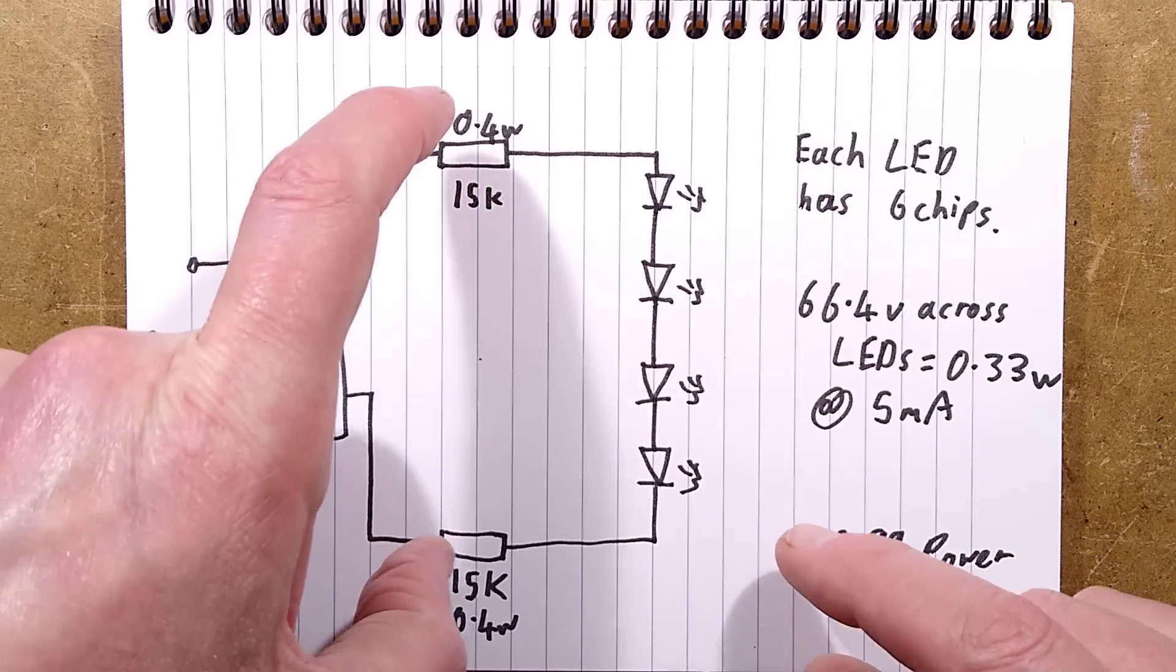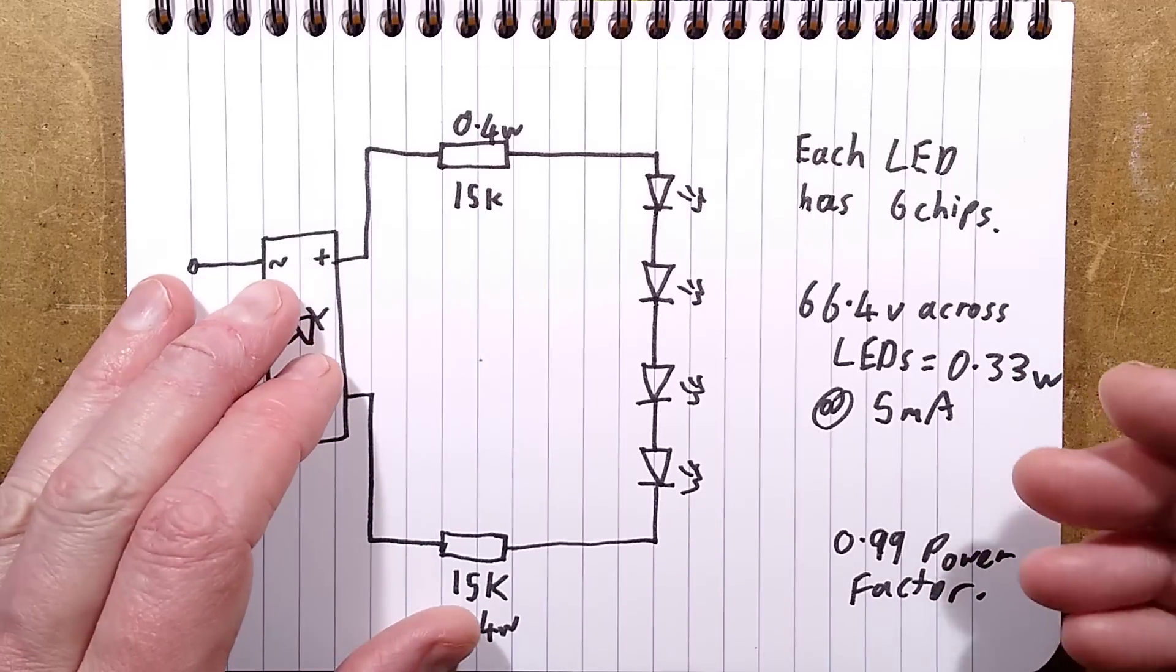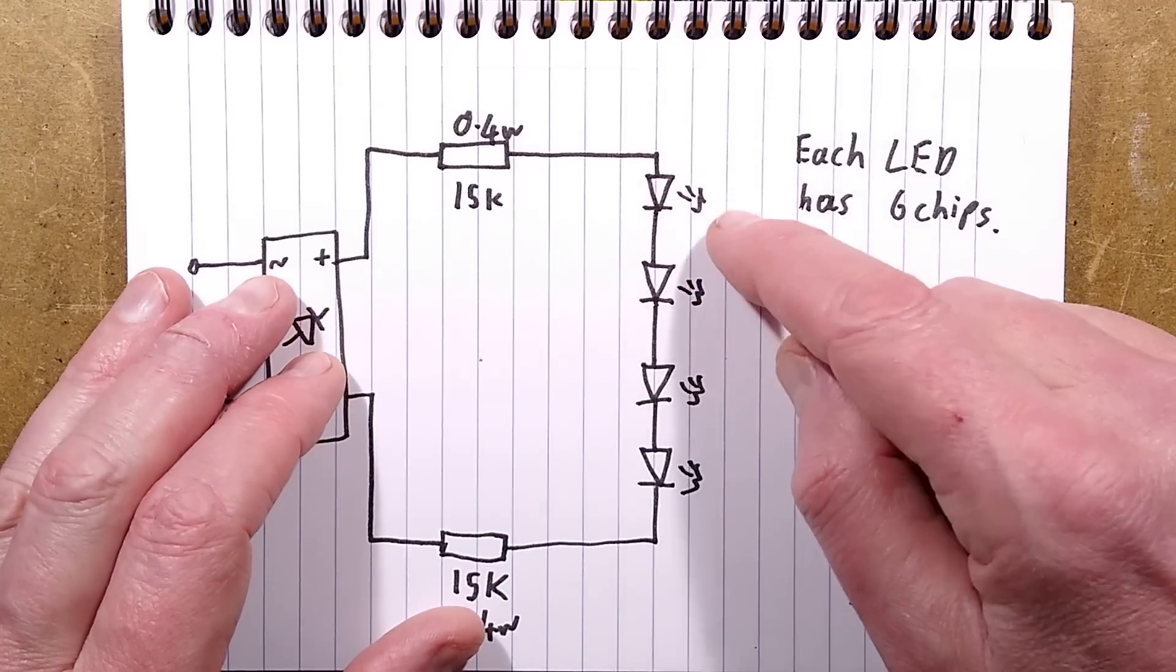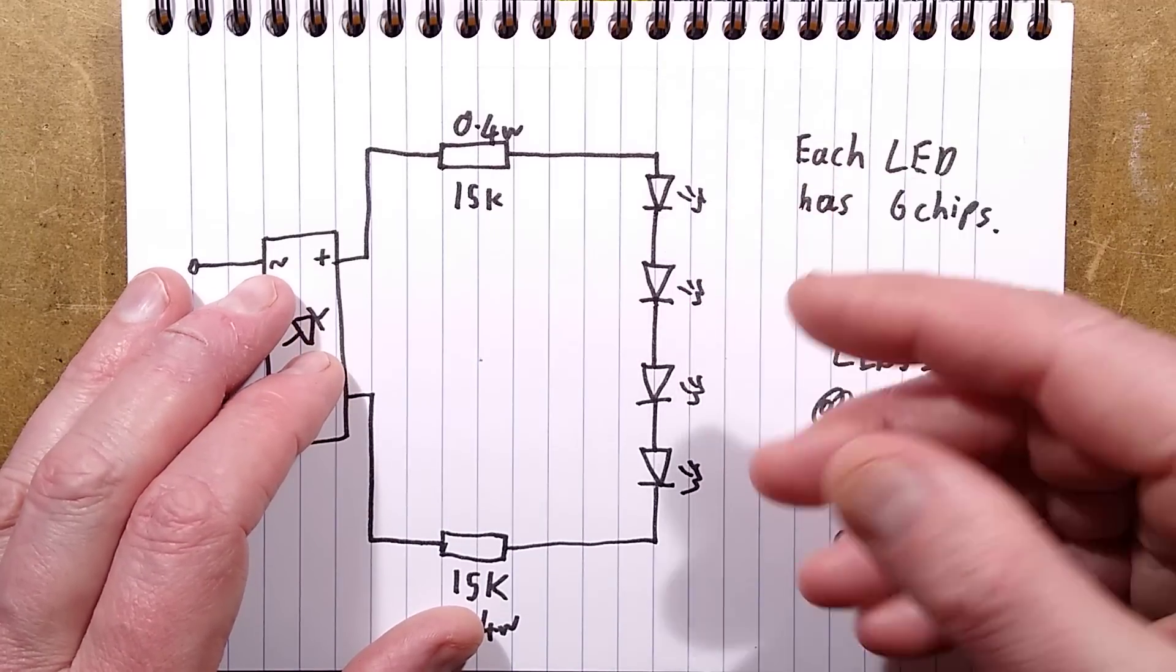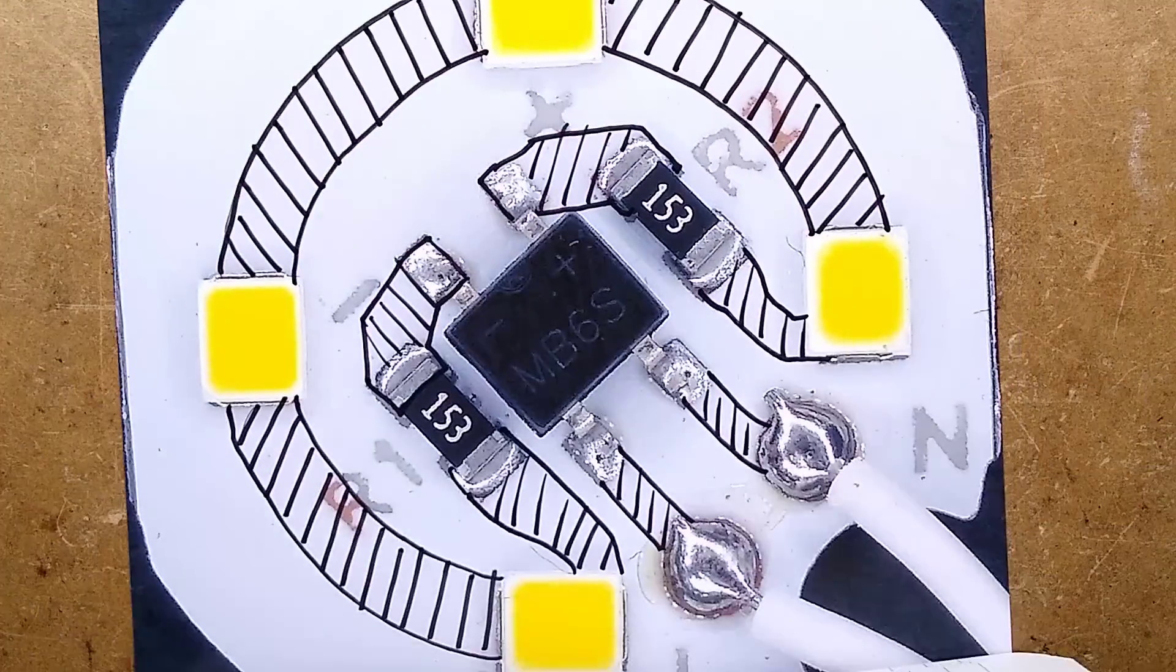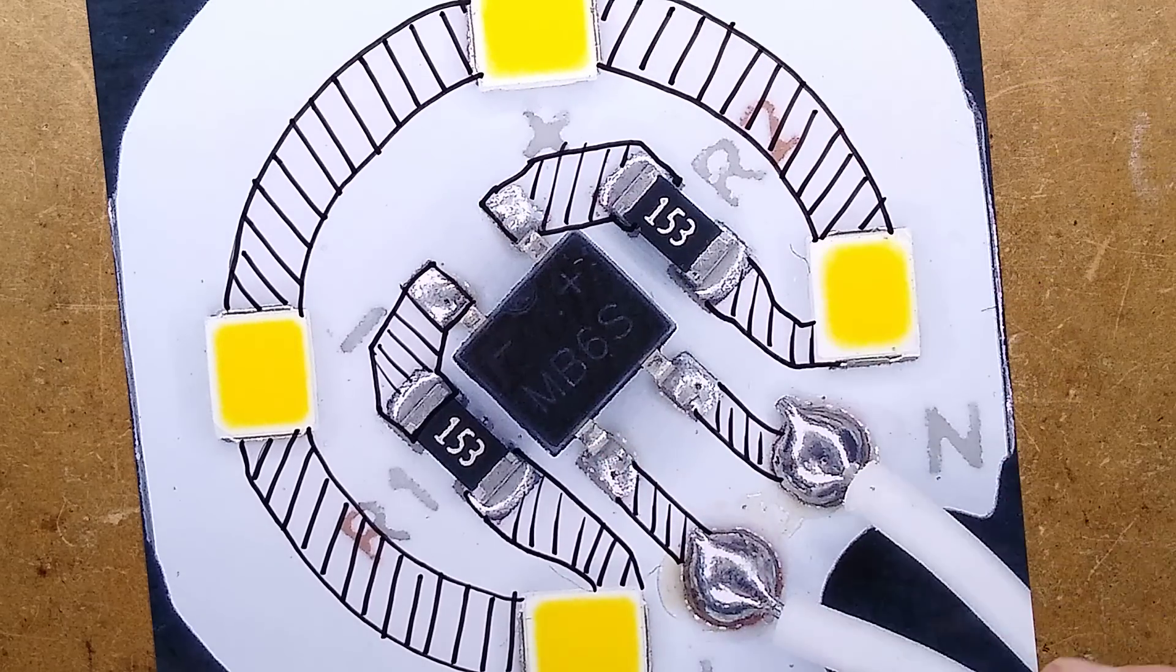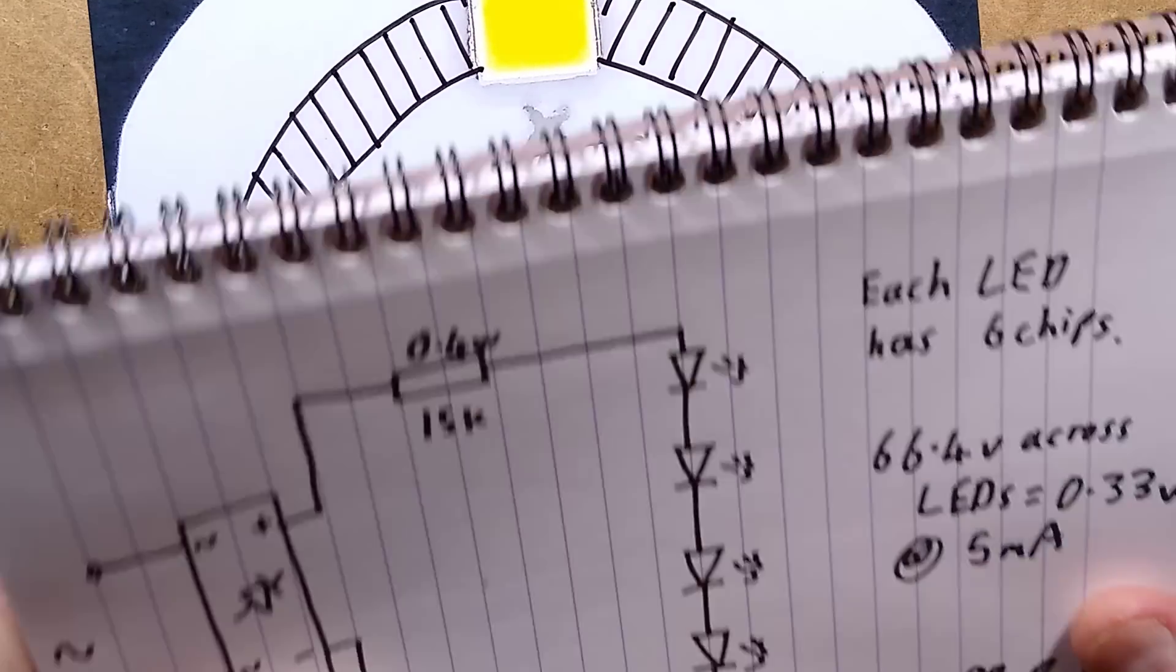However, the two 15k resistors are both dissipating more per resistor than the LEDs. So it would be quite nice increasing the number of chips and LEDs. They could have used the 12 LED chips, or they could have just added some more in because there is room there. They could have added a small arc of LEDs in here, and that would have lowered the dissipation across these resistors.